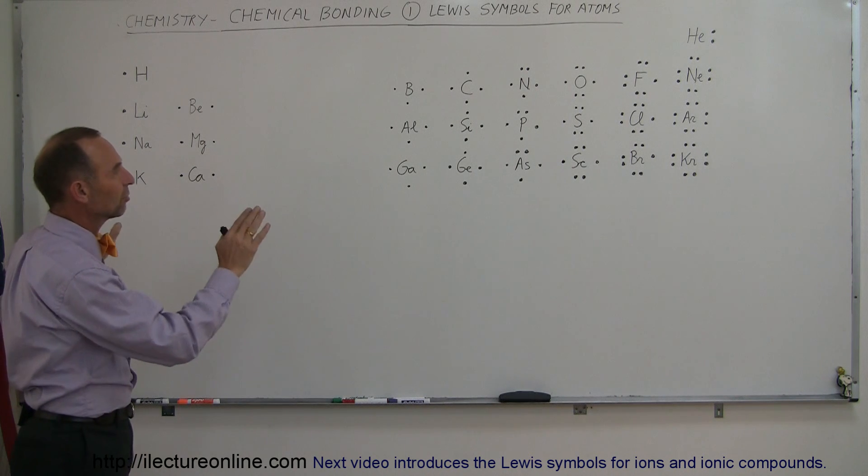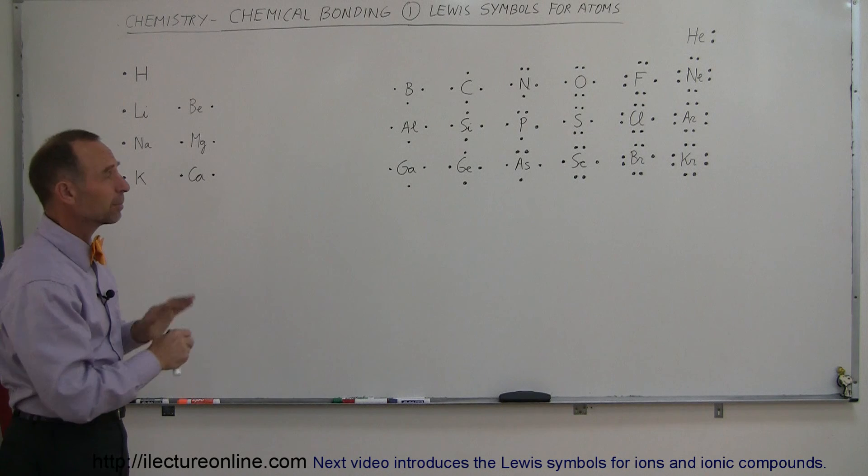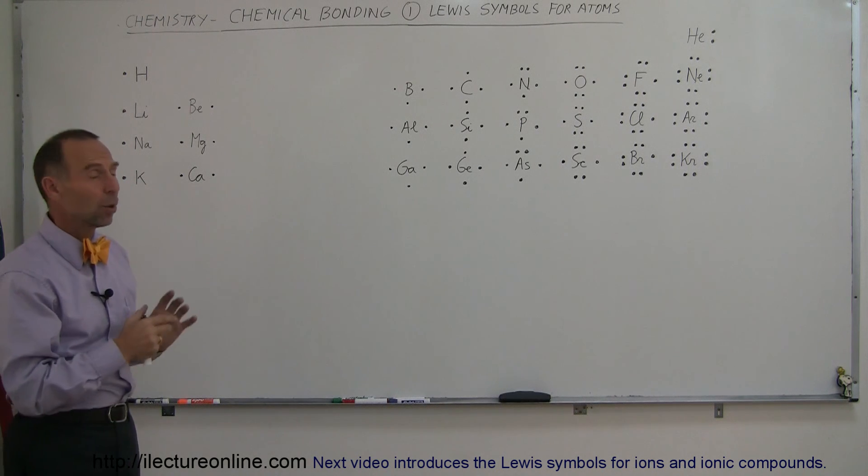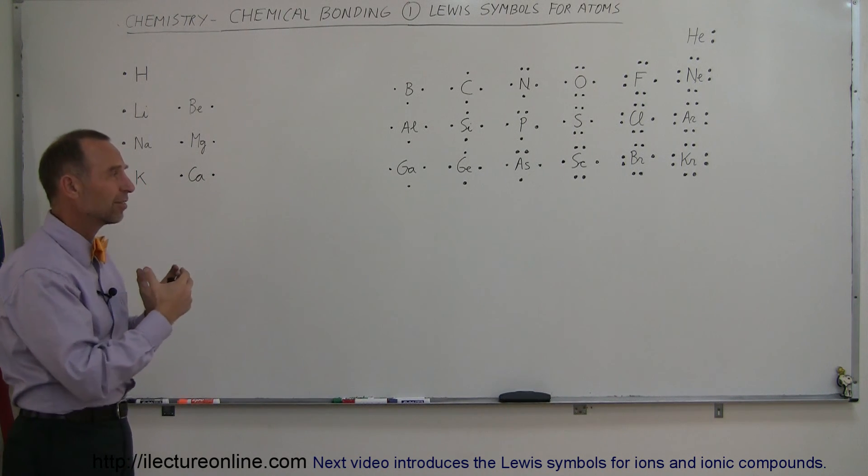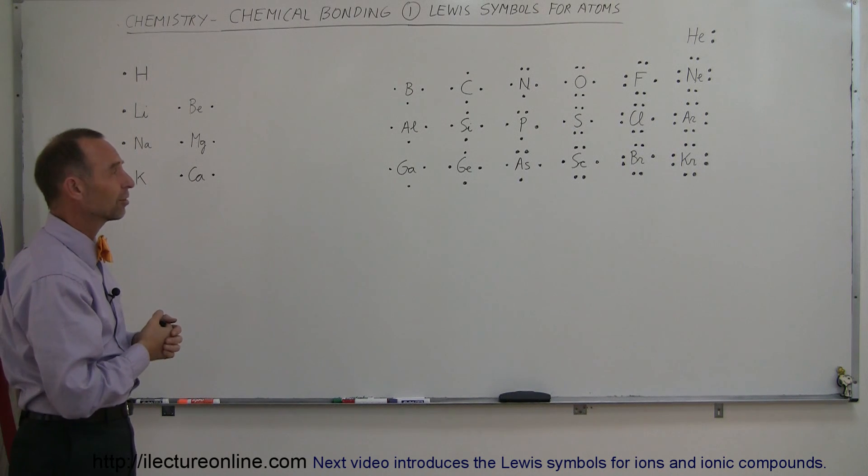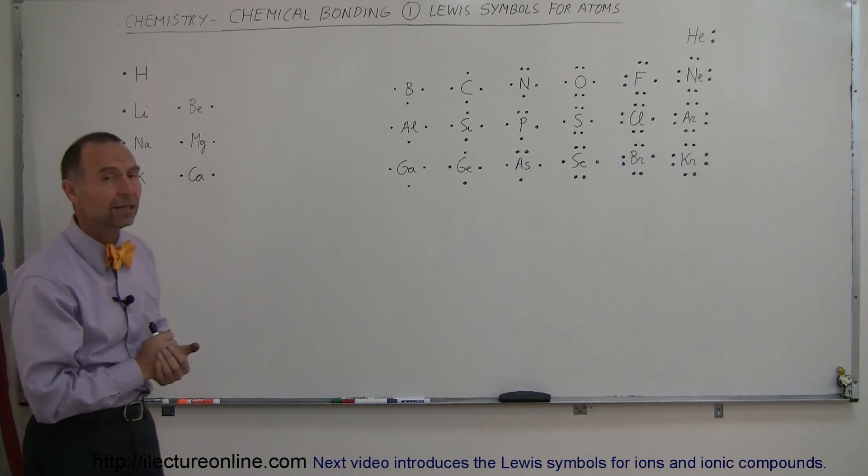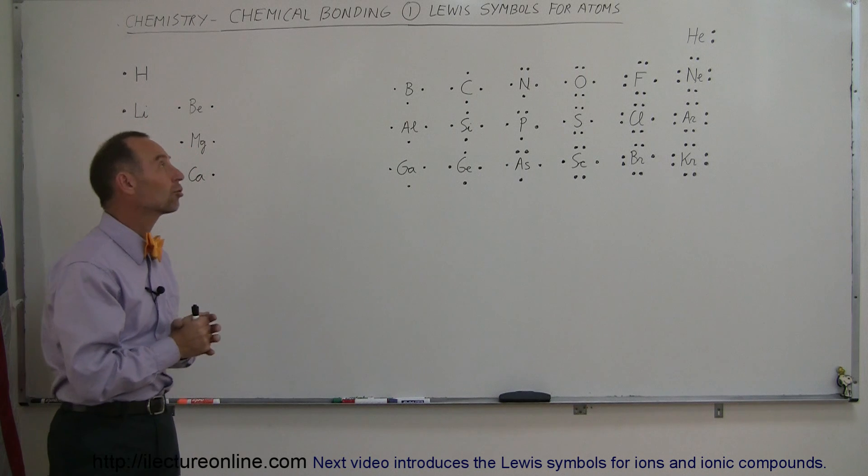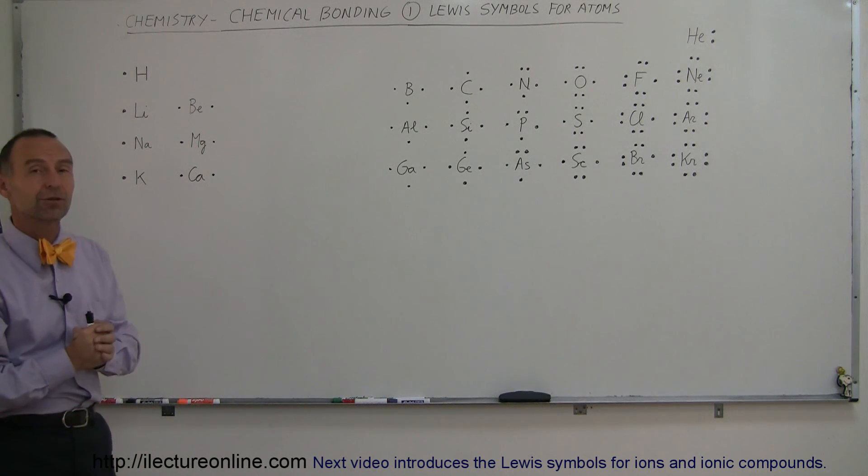So here at least you can see these are the atoms that are going to be most involved in the bonding process and this is how we indicate where the electrons are located and how we can then see how they're going to be involved in the bonding process. Okay, so it's a good start and then we'll delve into the Lewis structures in just a few videos from here.